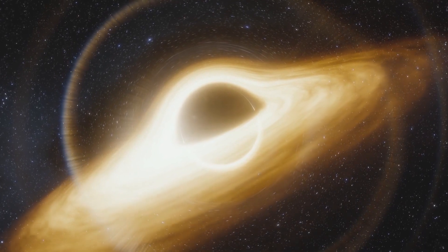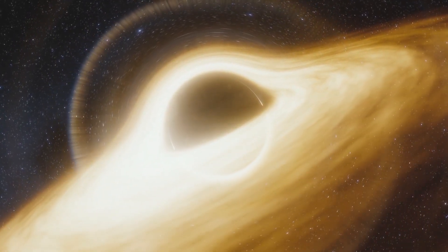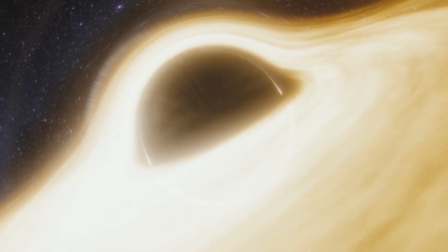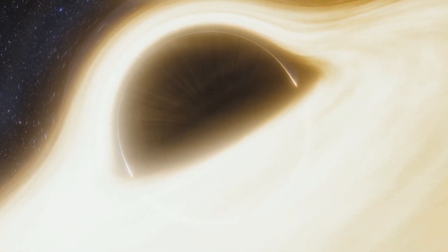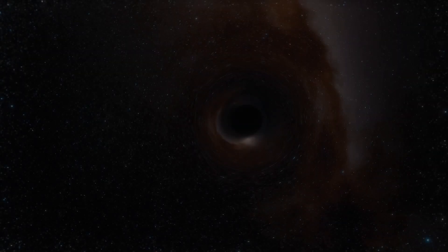The event horizon is created due to the extreme curvature of space-time near the black hole. It is located a certain distance from the black hole's singularity, determined by the mass of the black hole. In more massive black holes, the event horizon is farther from the singularity, while in smaller black holes, it is relatively closer.